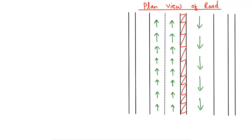We see here the plan view of the road where there are different symbols represented. I will explain the different components of the road from this plan view. We start with the carriageway of the road.